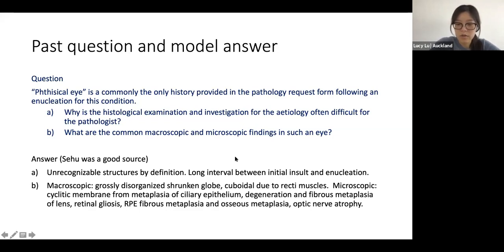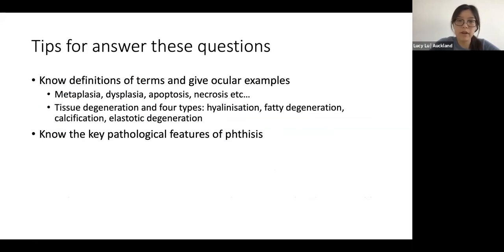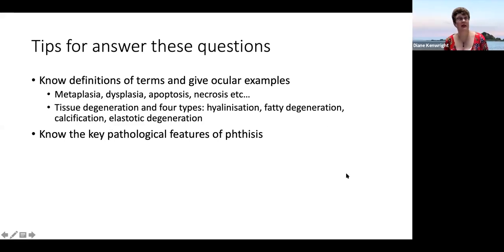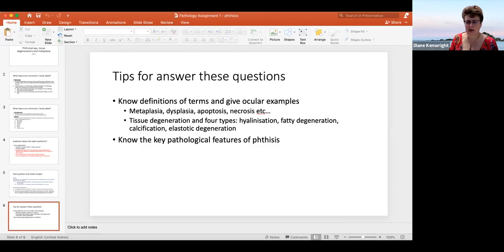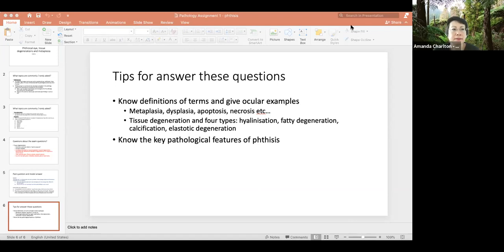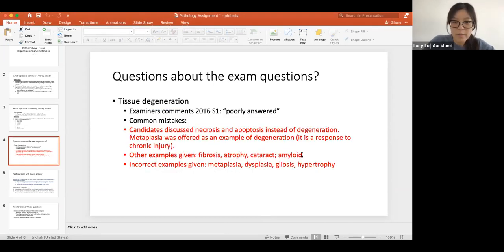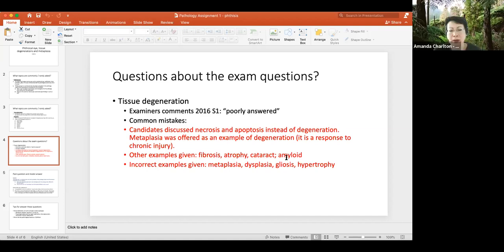Tips for answering the questions: know the different definitions of all these terms as they sound similar but are different, know the types of tissue degeneration, and don't confuse them with metaplasia or dysplasia. The only other type of degeneration I can think of is myxoid degeneration. Amanda suggested amyloidosis — I wondered about that but wasn't sure, because according to the examiner feedback apparently that's not one. Amanda noted it's quite a specific pathological process — abnormal protein deposition.